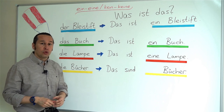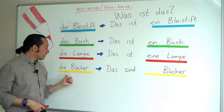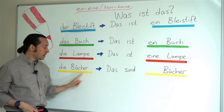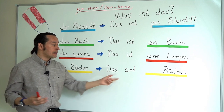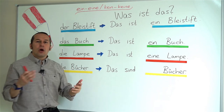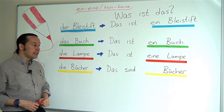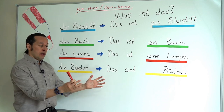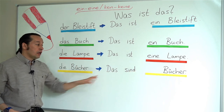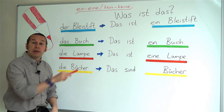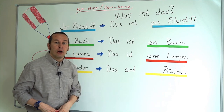For the plural form — die Bücher, colored yellow — I don't say 'Das ist' anymore; I say 'Das sind'. And there's no ein or eine in the plural. So: Das sind Bücher — these are books. If I mention specific books, I put the article: Das sind die Bücher. But for 'these are books' generally: Das sind Bücher.